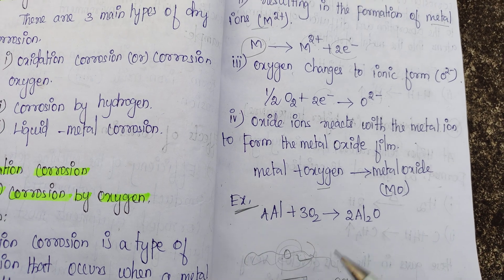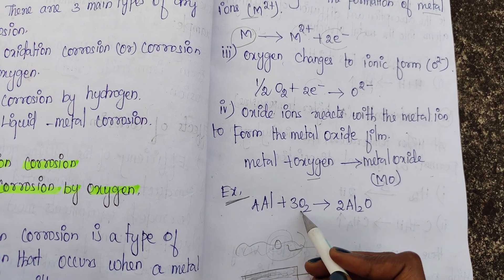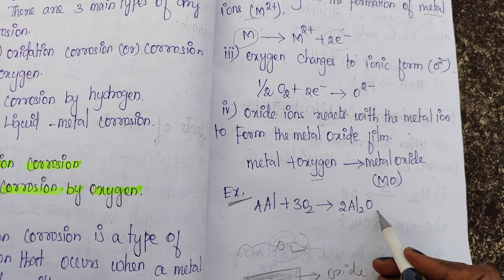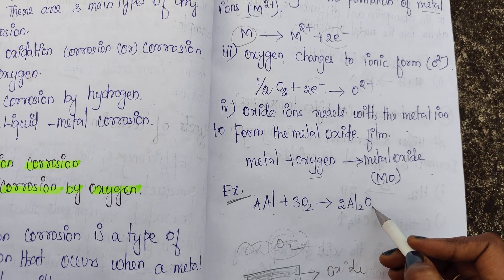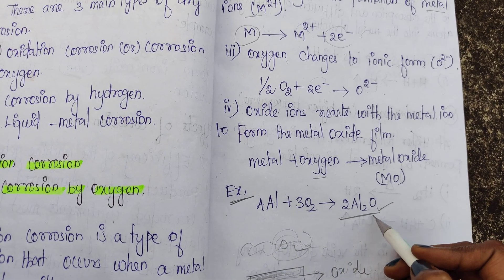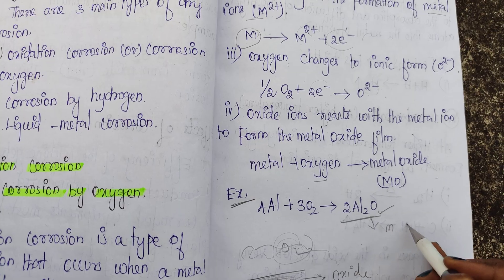Example: aluminum plus oxygen forms aluminum oxide, which is a metal oxide. This is the metal oxide formed from the reaction.